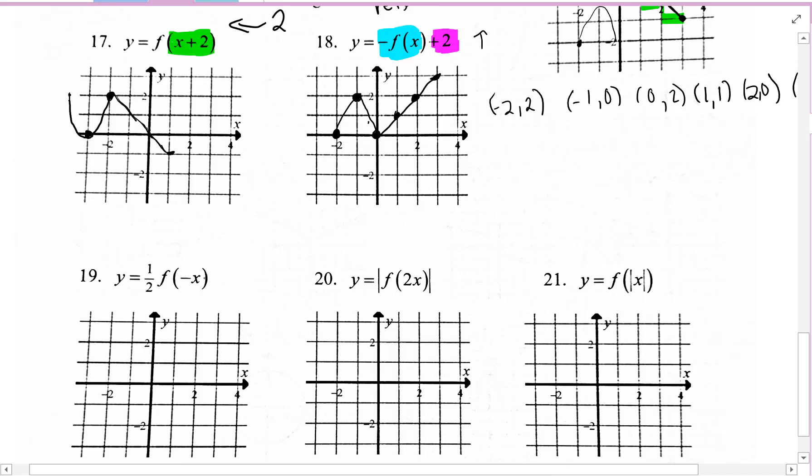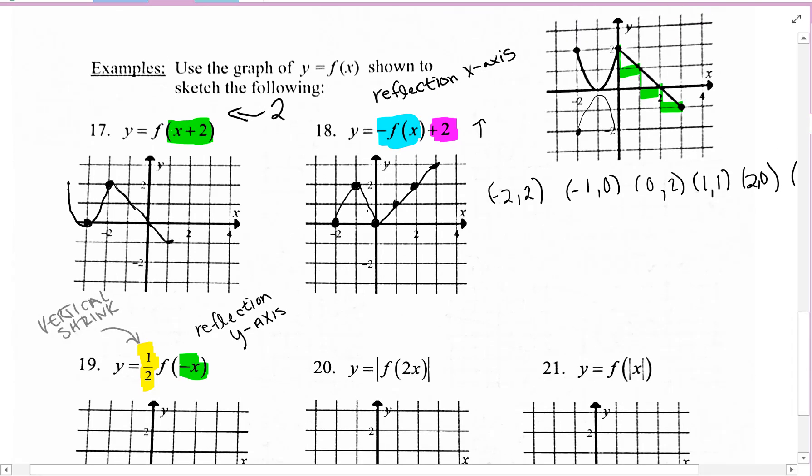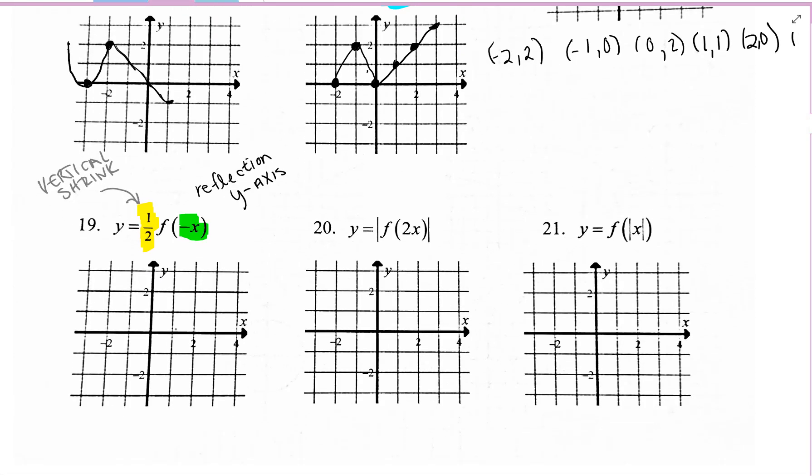y equals 1 half f of negative x. First of all, we have a number being multiplied to the entire function. That would be a vertical stretch or shrink, and in this case, because it's a fraction and it's in this position, the vertical position, that would be a vertical shrink. So think of the graph as being only half as tall as the original graph. Changing the sign of your input gives us a reflection in the y-axis. The shrink is happening. The shrink is being multiplied by the reflection, so the reflection is happening first. We do have to follow order of operations here. So a reflection over the y-axis.